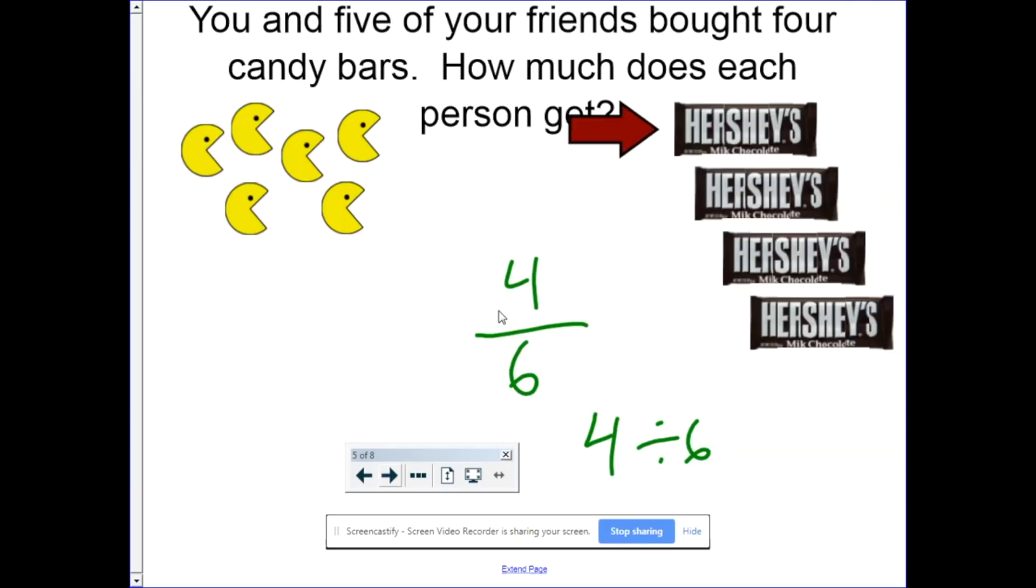Well, if it's one candy bar, it's split six ways. So there's one-sixth for each person. One-sixth from here, one-sixth from here, one-sixth from here, and one-sixth from here. One, two, three, four, four-sixths. Let's see if that works out.